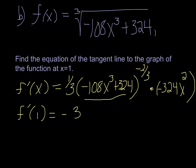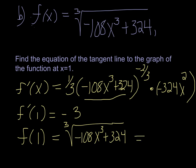We also need to know what f(1) is. So that's the cube root of negative 108 times x cubed plus 324. Well, 1 cubed is just 1, so we're just looking at the cube root of negative 108 plus 324. So that's 216. And then if you go to math option 4, you can get the cube root, put in cube root of 216, and we get 6. So f(1) is 6.